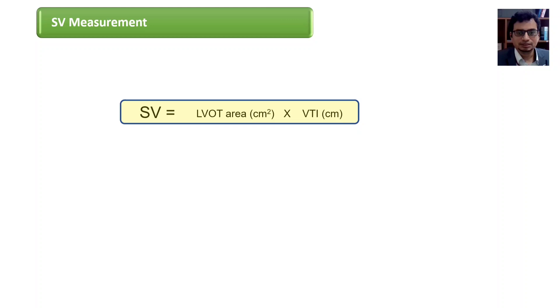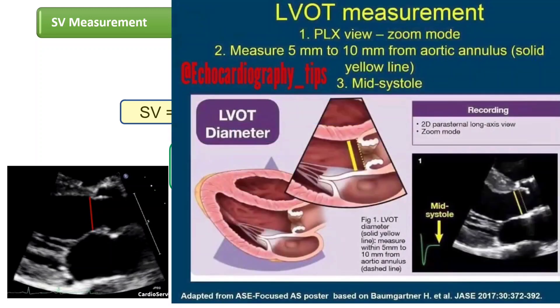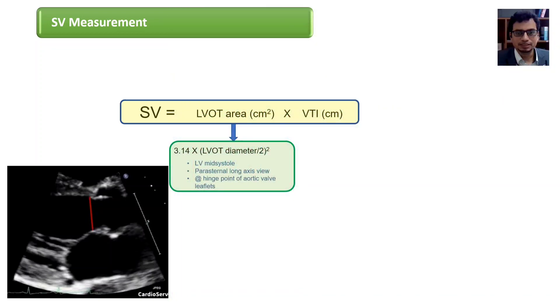LVOT diameter is calculated in LV mid systole: freeze the view at mid systole and at the hinge of aortic valve leaflet measure the distance from inner edge to inner edge. From LVOT diameter LVOT area is calculated using formula pi r square. Now LVOT diameter should be measured correctly as any inaccuracy in the diameter measurement will be squared.